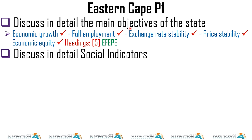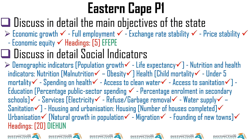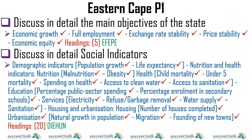For macroeconomic objectives, the mnemonic is EFEPE: E = economic growth, F = full employment, E = exchange rate stability, P = price stability, E = economic equity. For social indicators, the mnemonic is DIHAN — already addressed. In Free State, the essays were: discuss in detail reasons for international trade, and discuss in detail arguments in favour of protectionism. The international trade essay appeared many times across provinces.